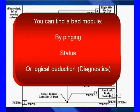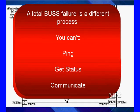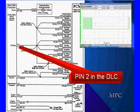You can find a bad module by pinging, getting status, by logical deduction and diagnostics. Any one of the three. If you're working on a system where you can get a status report, then go do it, get that report, and verify it and find it. A total bus failure is a different process. That means we can't ping, we can't get a status, we can't communicate, and we're not going to see a U code. So this is a worst case scenario.